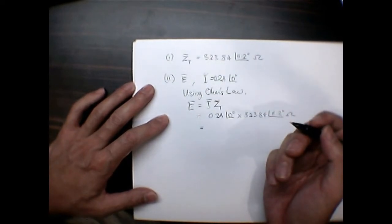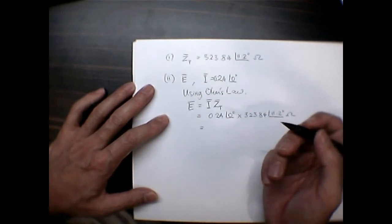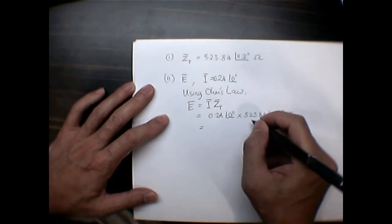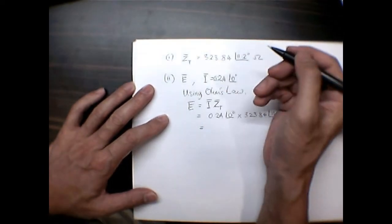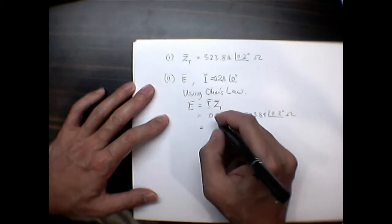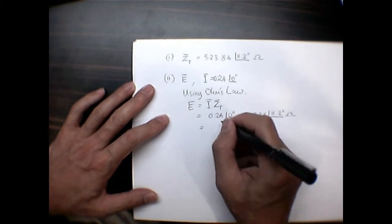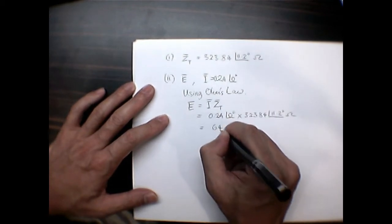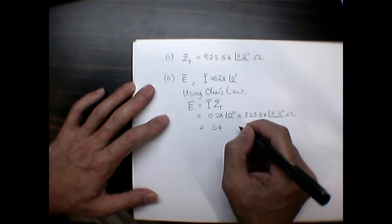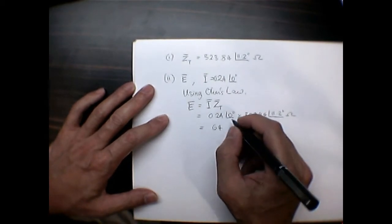That gives me... I'm sorry, here it should be times 10 to the... That would give me 64.76 at the angle of 11.2 degrees.